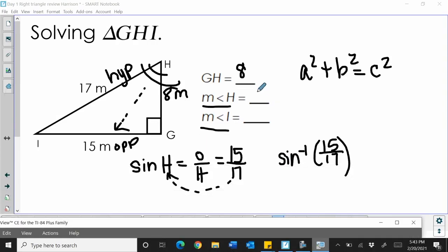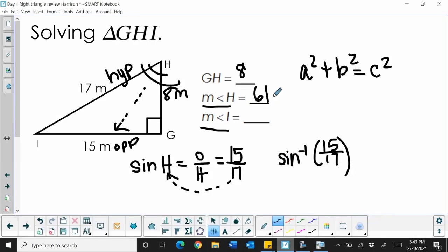So that is 61.9 degrees. And that's angle H. Now, I can also work a trig function to find angle I. So let's go down and see which trig function you could use.